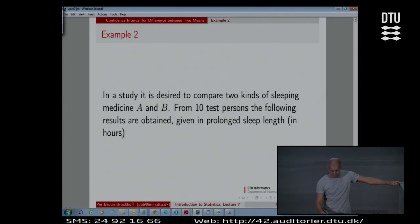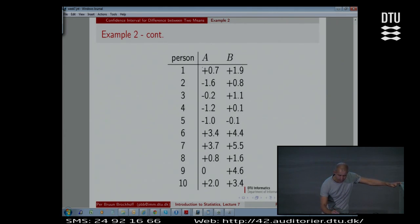Then we have a measure. For instance, when person one tried medicine A, we don't have all the details, but we just have to understand the following. Person 1, when having medicine A, improved 0.7 hours, gained 0.7 hours of sleeping. The same person 1 gained 1.9 hours using medicine B.